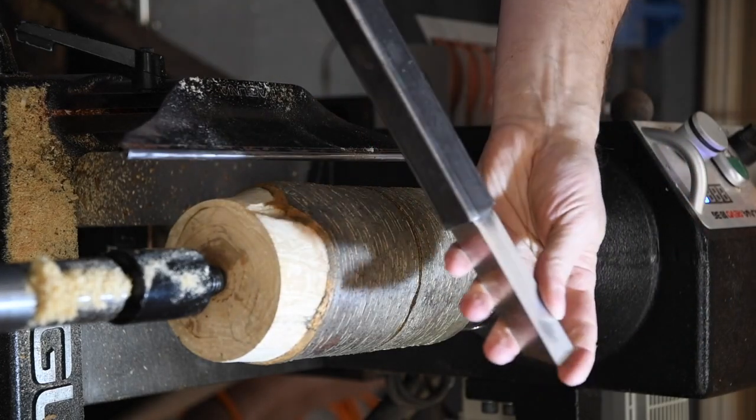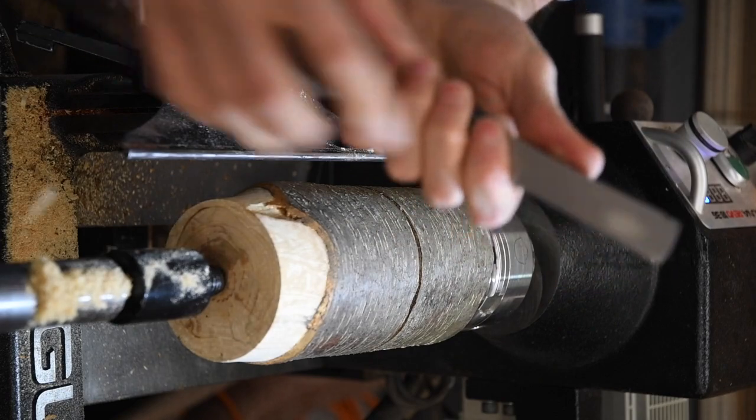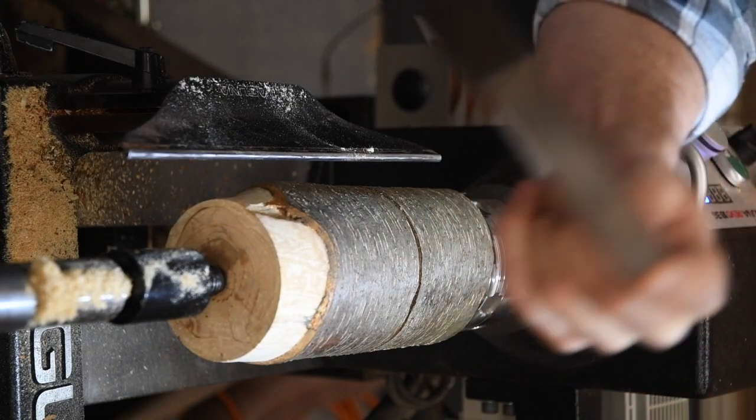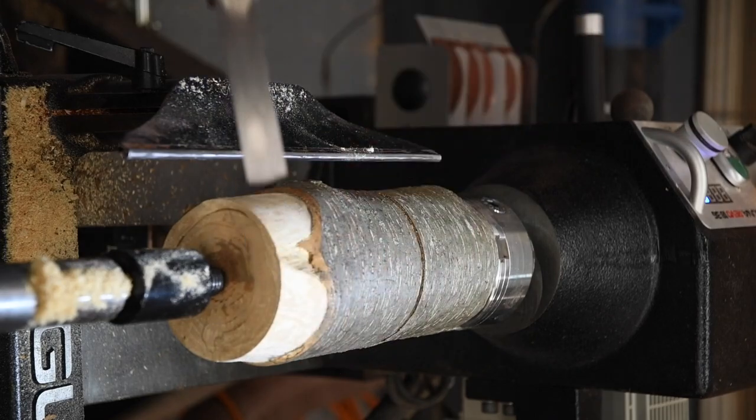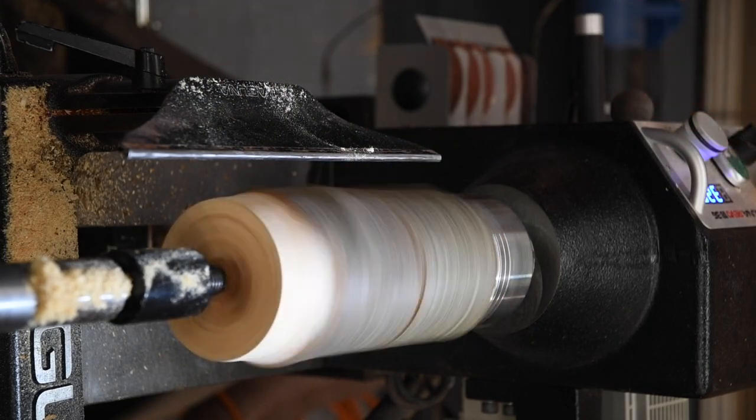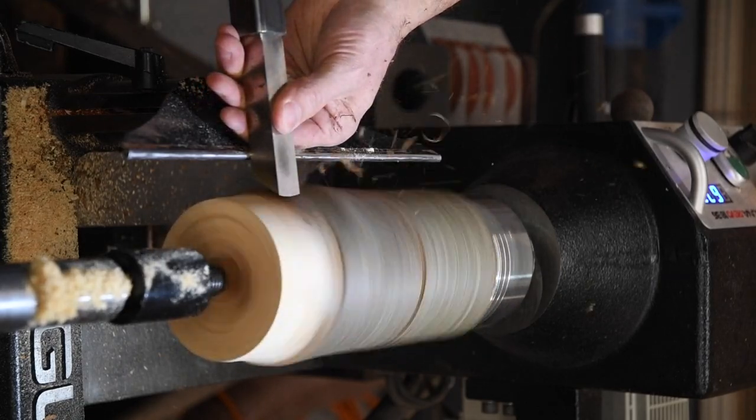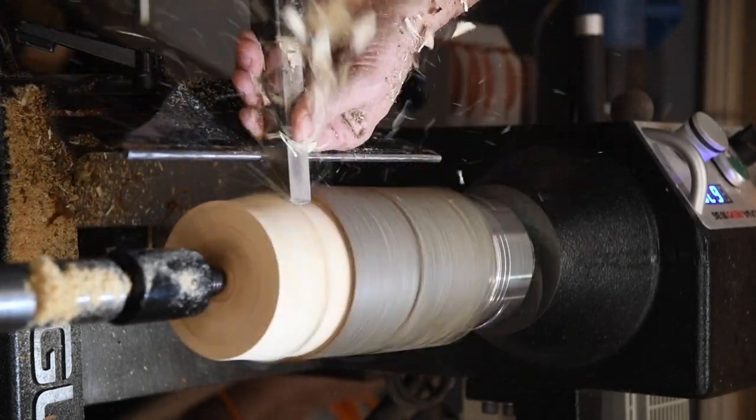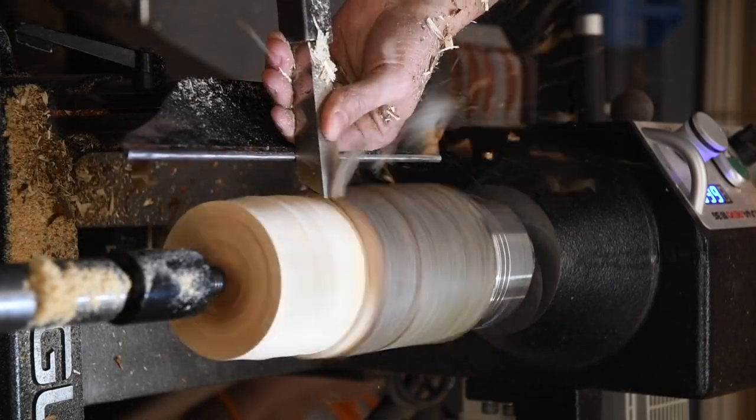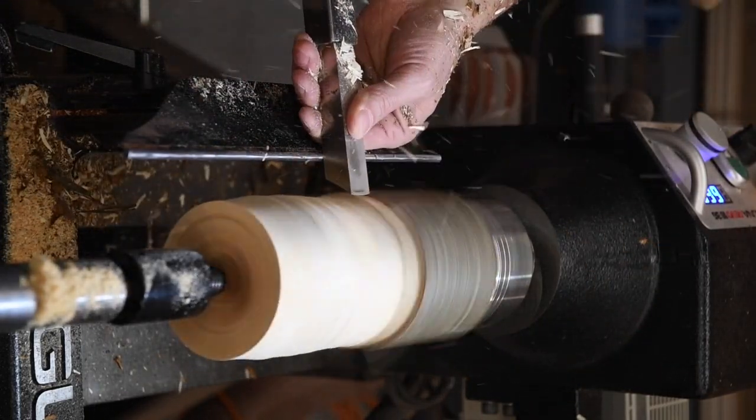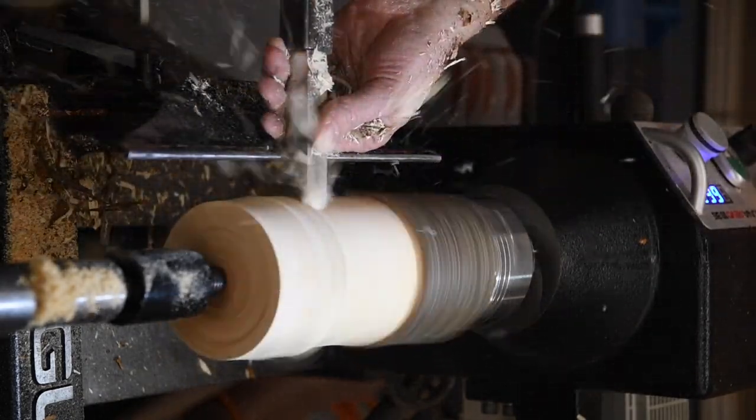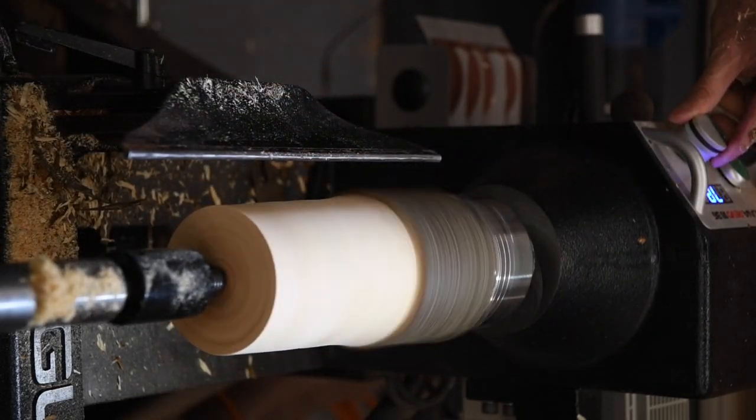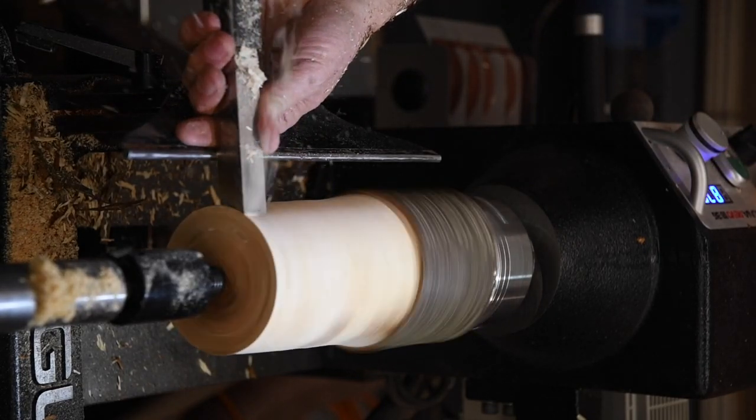And it's time to remove some more wood. I'm going to use a different tool - it's a large bedan. It has a slight radius, and I'll rub the bevel. I'll bring this in and it'll make a nice slicing cut and it will remove wood quickly. Now that it's round, we can turn up the speed.